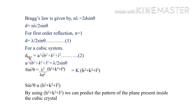For a cubic system, the interplanar distance d_hkl = a / sqrt(h² + k² + l²). Equating this with the Bragg equation and squaring both sides, we get: a² / (h² + k² + l²) = lambda² / (4 sin² theta). Rearranging: sin² theta = (lambda² / 4a²) × (h² + k² + l²). Since lambda is a monochromatic wavelength and a is the edge length, lambda² / 4a² is a constant, written as K.